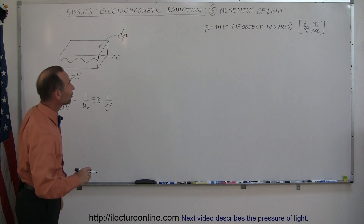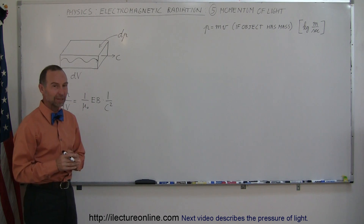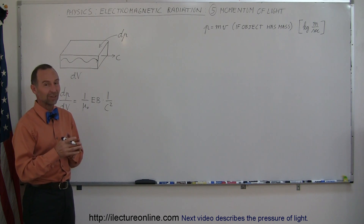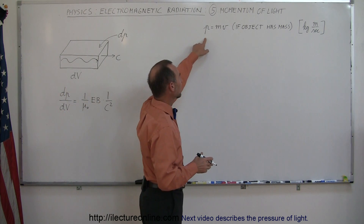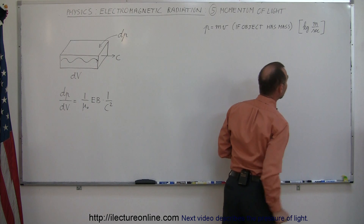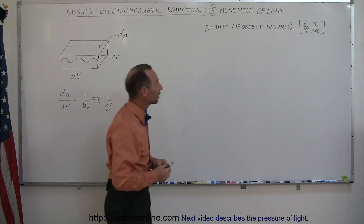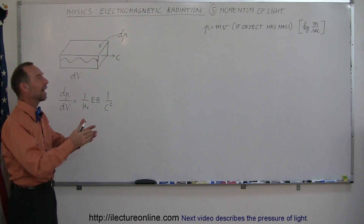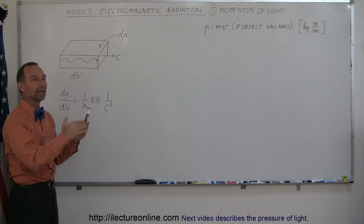Welcome to iLectra online. Here's section five on electromagnetic radiation, and this one is a really wild one. We're going to talk about the momentum of light. Remember, light is pure energy that doesn't have any mass. From a classical sense, momentum P is simply the product of an object's mass times its velocity, with units of kilograms meters per second. So when we talk about the momentum of light, you say: wait, light doesn't have any mass — how can it have momentum? But it does. It turns out that when light bounces off a surface, it actually puts pressure on that surface, and therefore we can surmise that it has momentum.